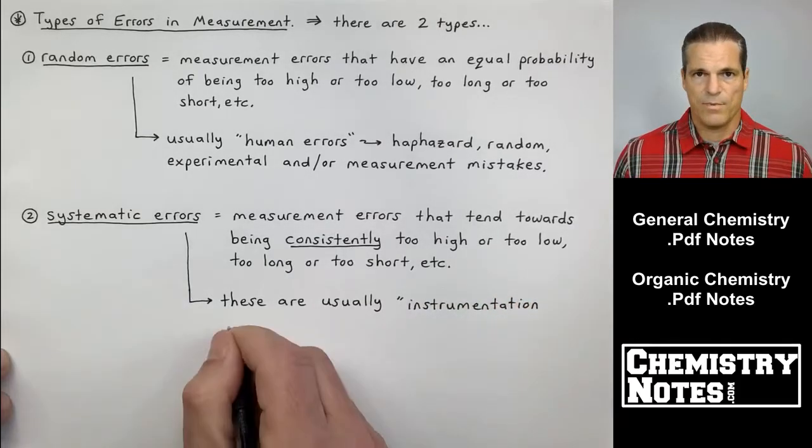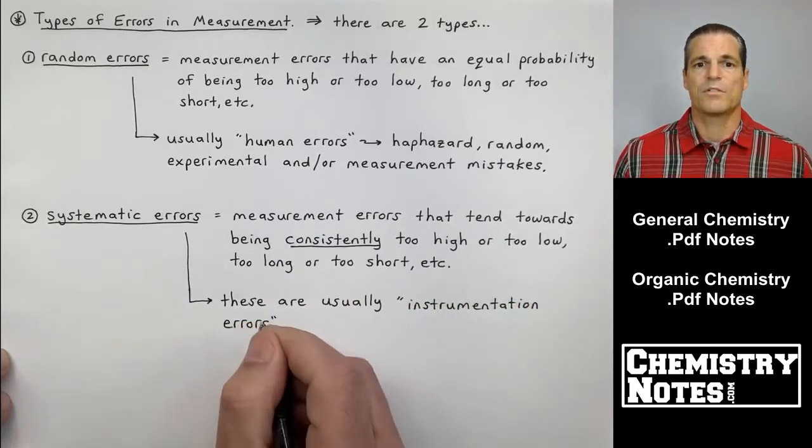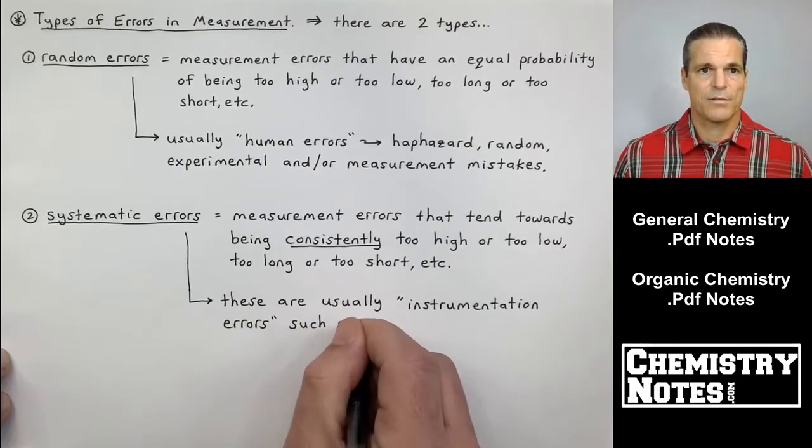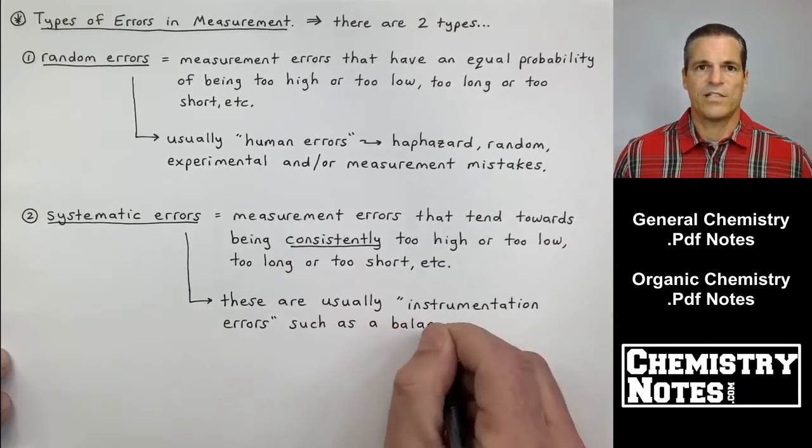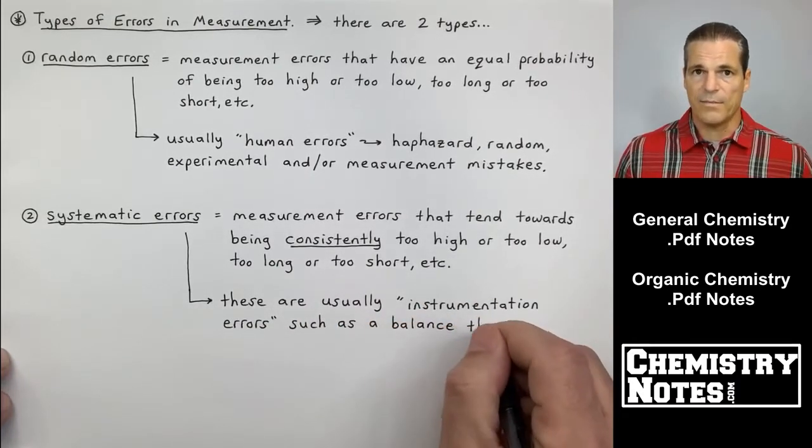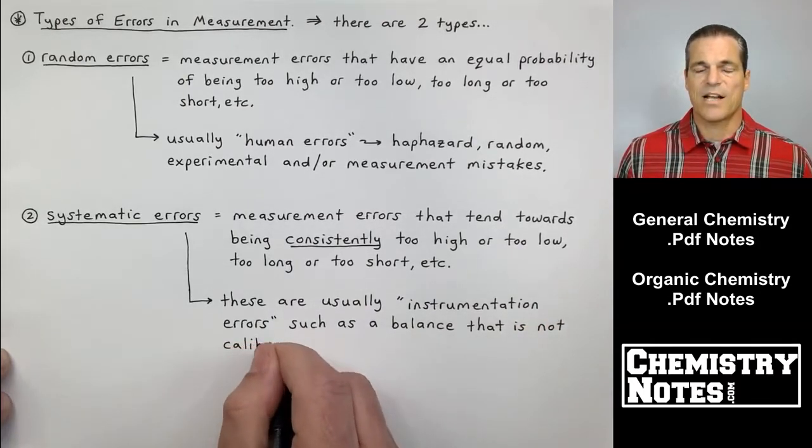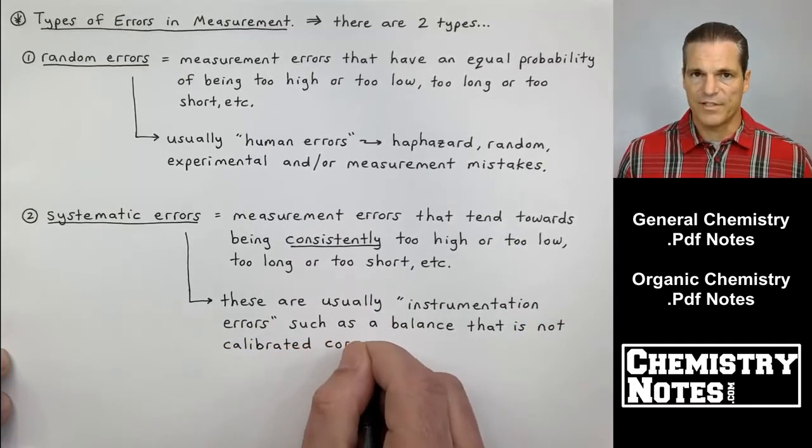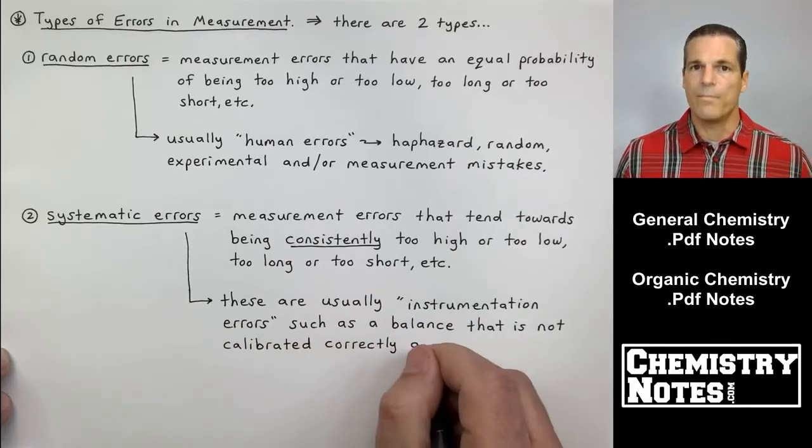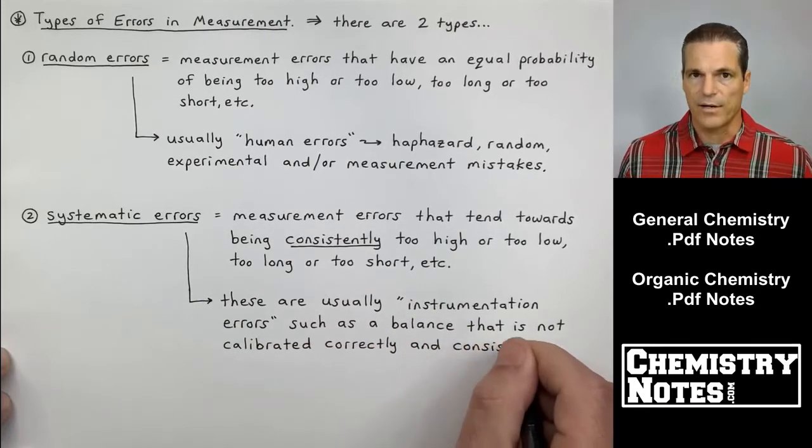Systematic errors are not human errors. Systematic errors are usually instrumentation errors. So, we have two synonyms here. Number one, random errors is like human error. Systematic errors is kind of synonymous with instrumentation errors, equipment errors, glassware errors.